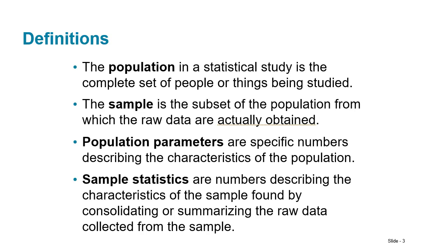The population is always the large group that you are trying to study. The sample is the subset of that large group that you are going to gather information on. Populations have parameters, and those are always described with Greek letters. So whenever you see a Greek letter representing a measurement, you know that represents the population.